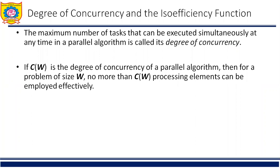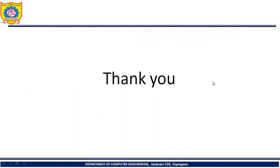The degree of concurrency: the maximum number of tasks that can be executed simultaneously at any time in a parallel algorithm is called the degree of concurrency. If C(W) is the degree of concurrency of a parallel system, then for a parallel problem of size W, no more than C(W) processing elements can be employed effectively. This concludes the video covering the scalability of parallel systems, the ISO efficiency function, cost optimality and ISO efficiency, the lower bound on ISO efficiency function, and the degree of concurrency and ISO efficiency function. Thank you very much.